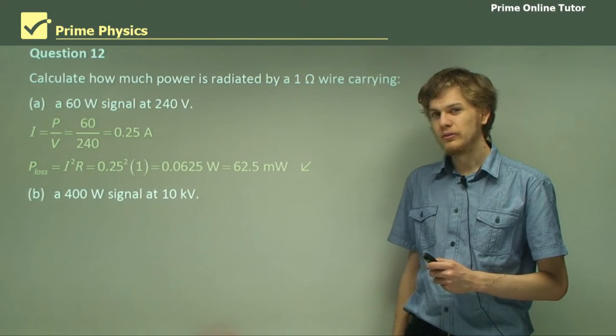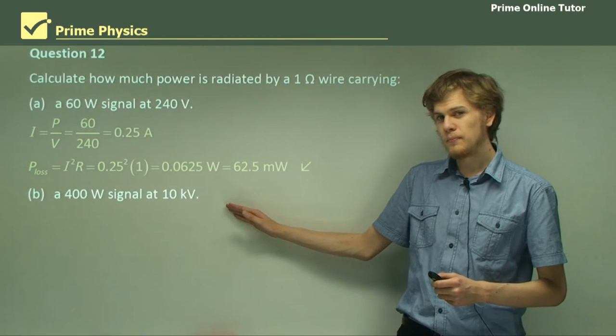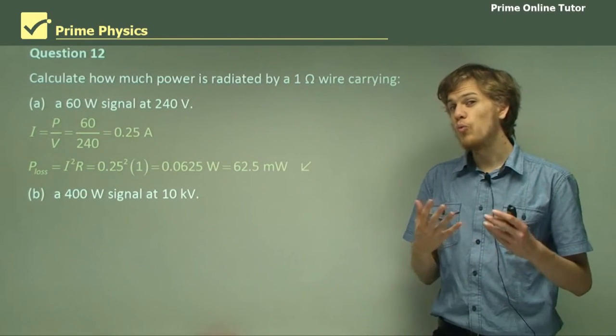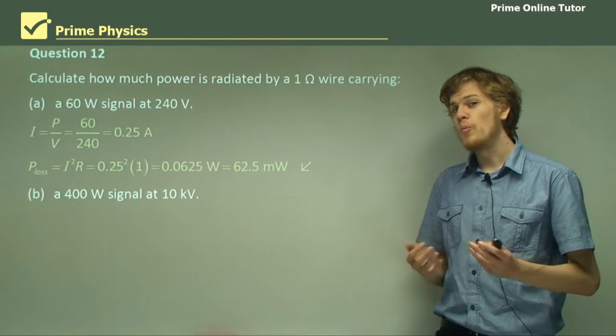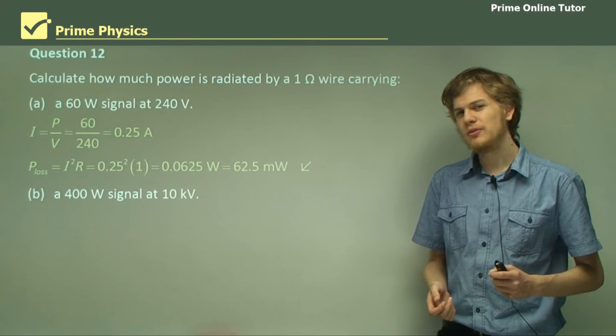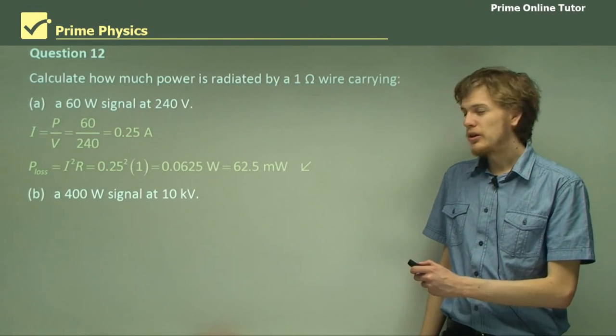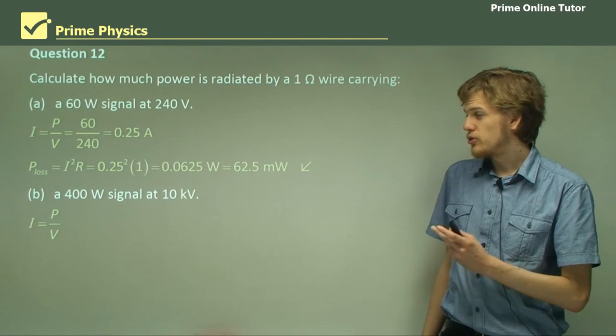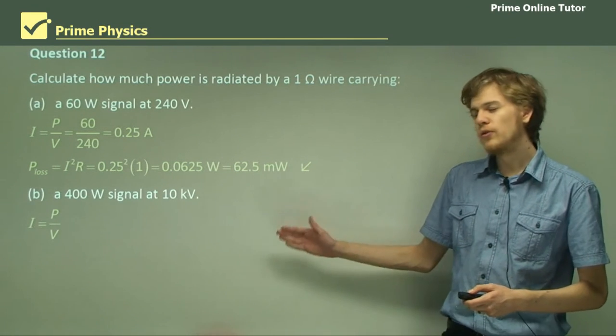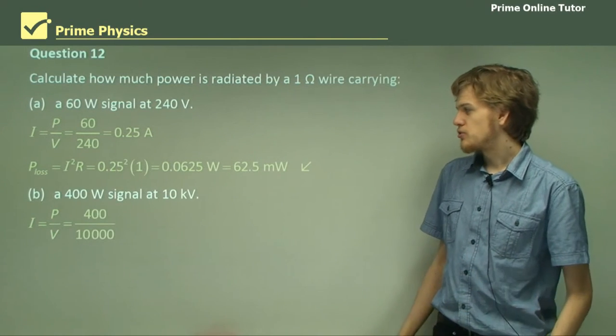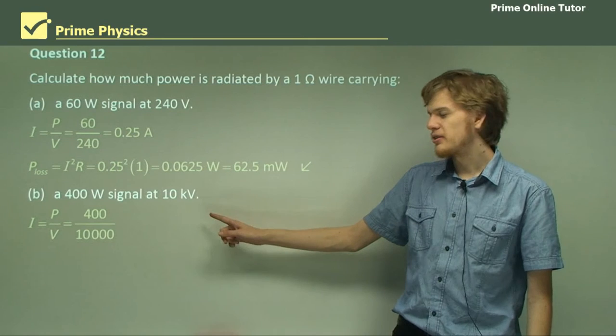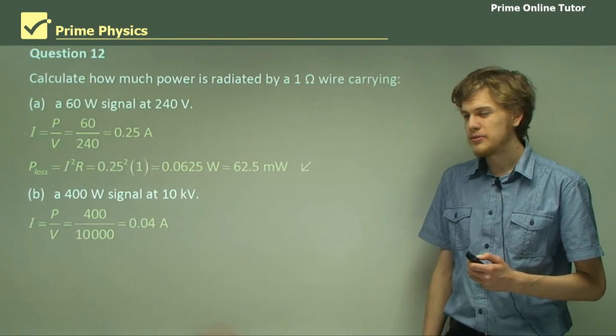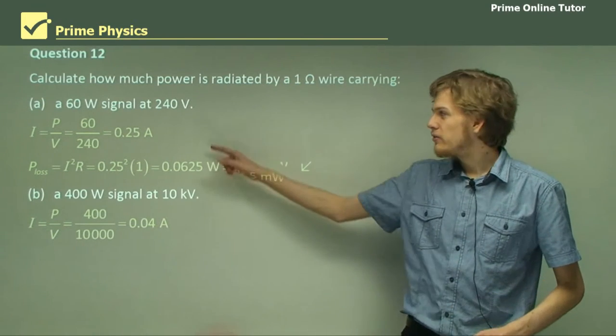How about a 400 watt signal at 10 kilovolts? Now, because the signal is so many more watts, we might expect it to be more power lost. Let's find out. We can use the same method in order to figure out the current and the power loss. So the current is the total power over the voltage of the total signal. So that's 400 over 10,000, that is 10 kilovolts. And this produces 0.04 amps, an even lower current than in part A.